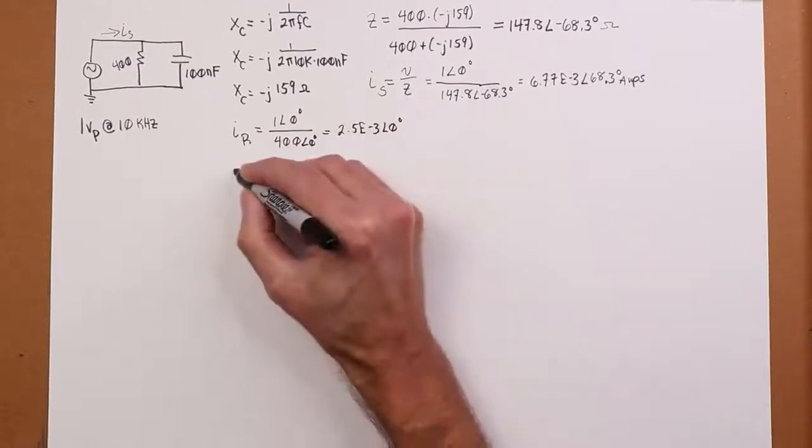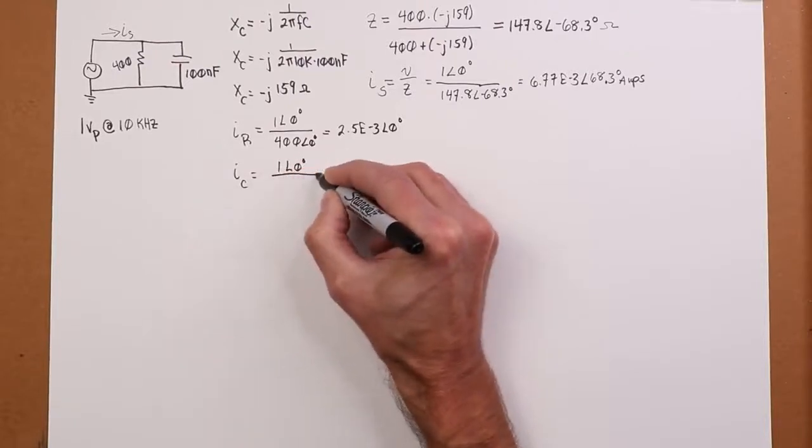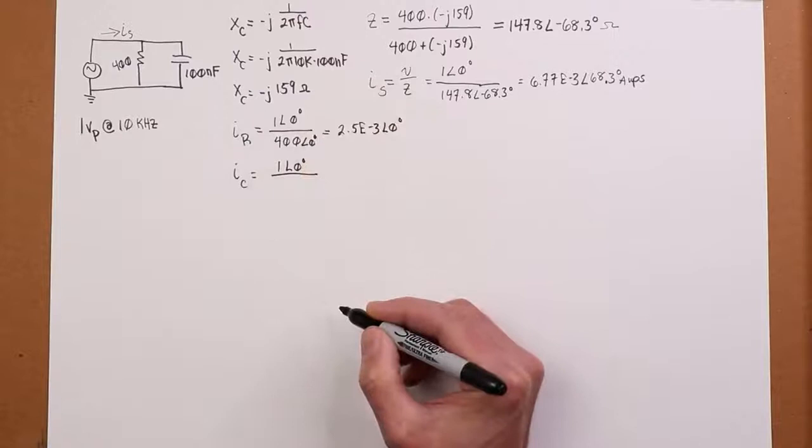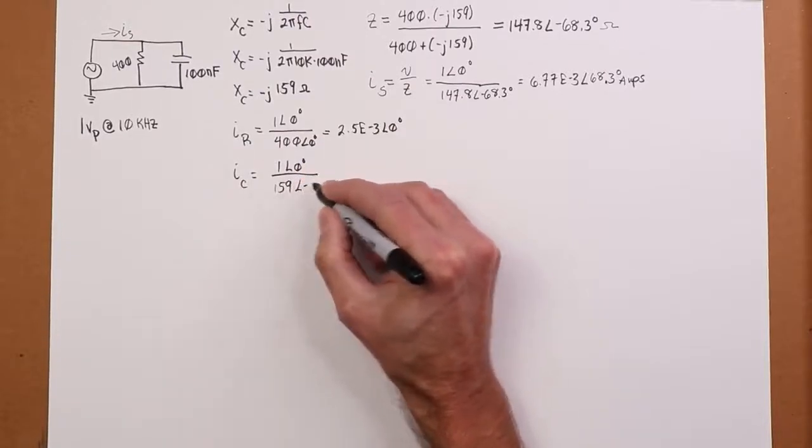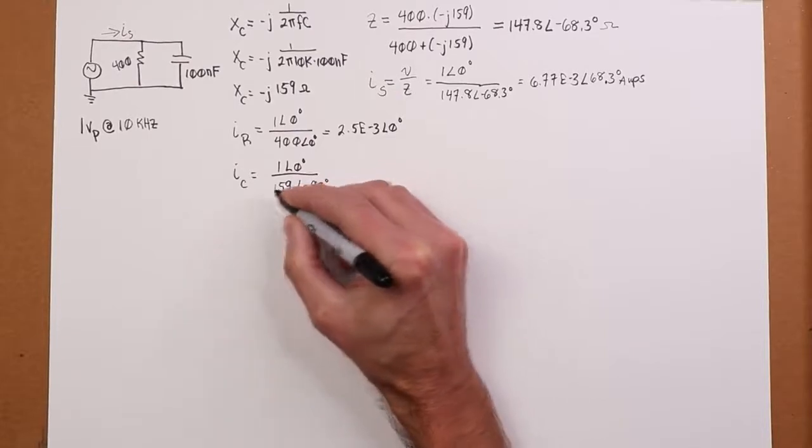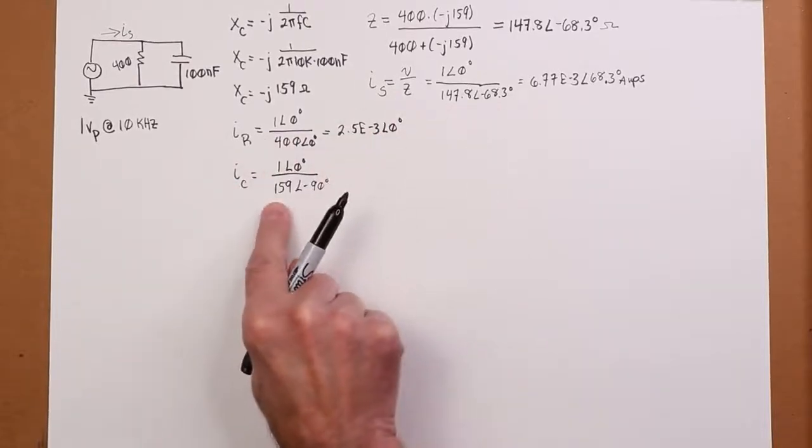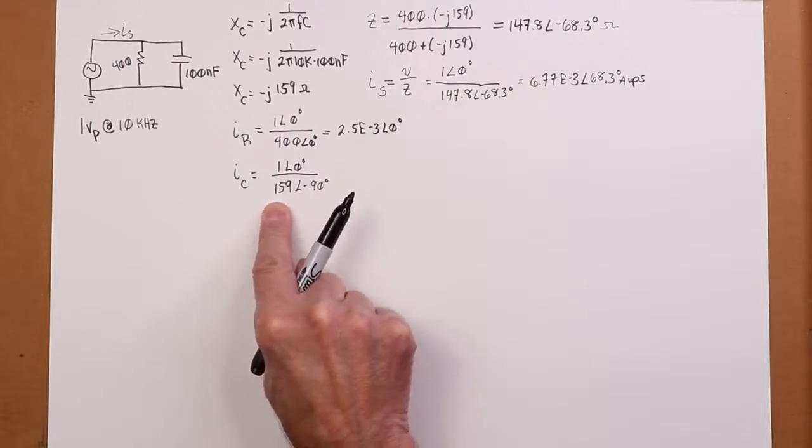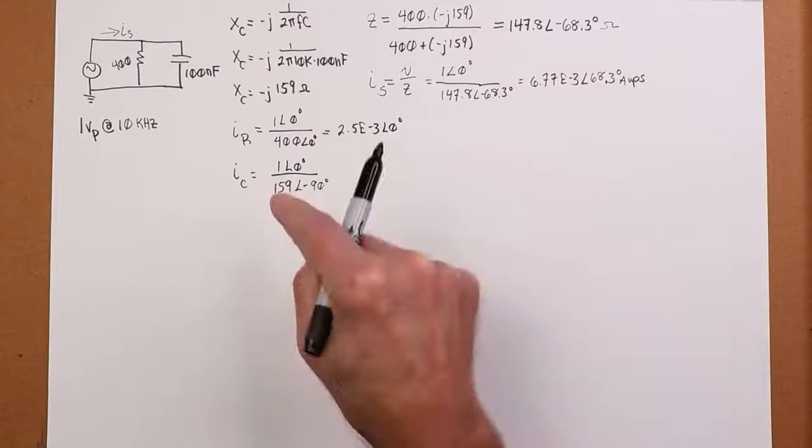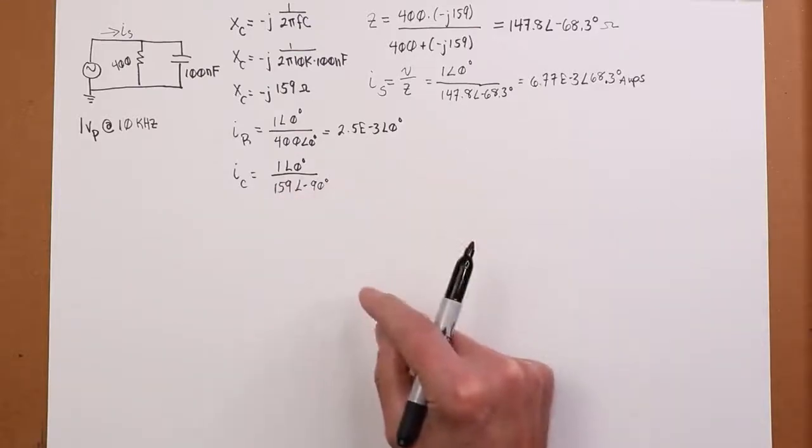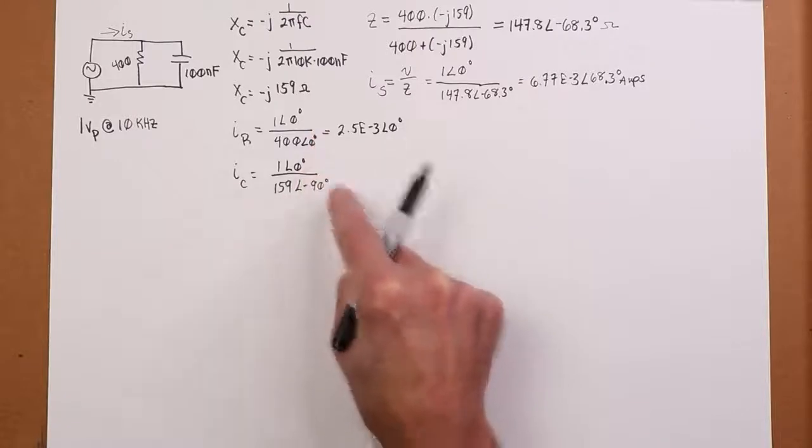And then the IC value, similar deal. In this case, it's 159 at an angle of minus 90. You should get used to sort of freely going back and forth between saying that's minus j159 or 159 at an angle of minus 90. It's two ways of saying the same thing. It's six versus half a dozen. But sometimes it's just more convenient to think of it in one form or another, like this. If we're going to do a divide, it's convenient to think of it in terms of polar form.